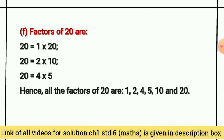Factors of 20 — all the factors of 20 are 1, 2, 4, 5, 10, and 20.